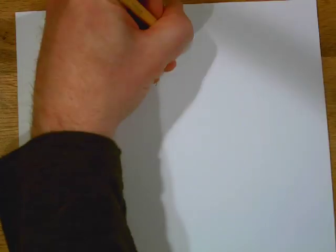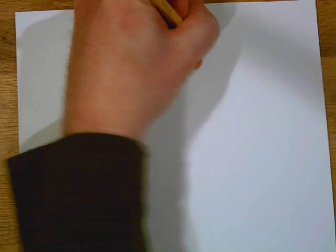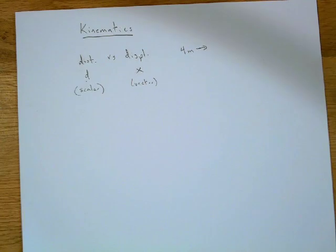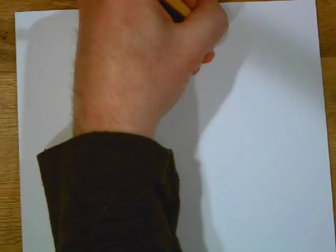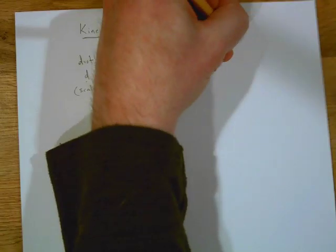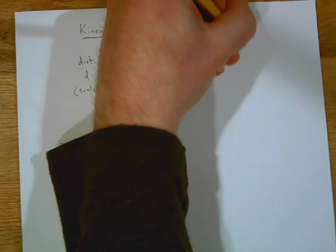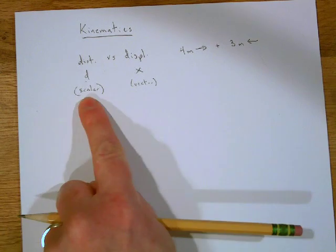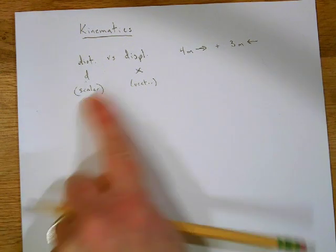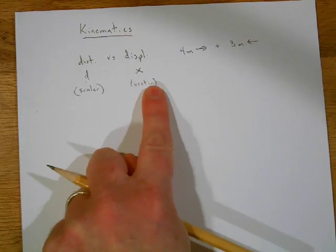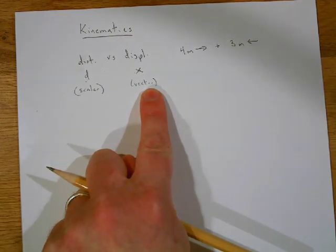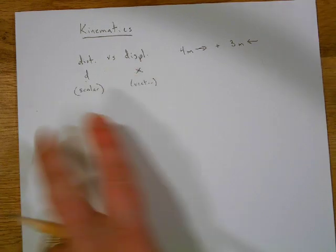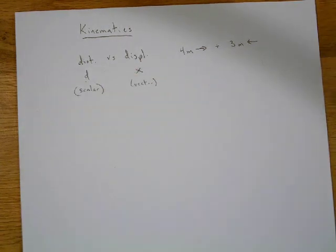For example, if you walk 4 meters to the right plus 3 meters to the left, you have traveled a distance of 7 meters, and you have a displacement of 1 meter to the right.